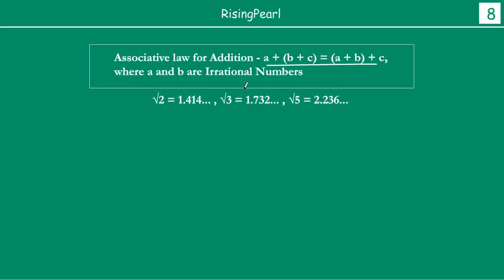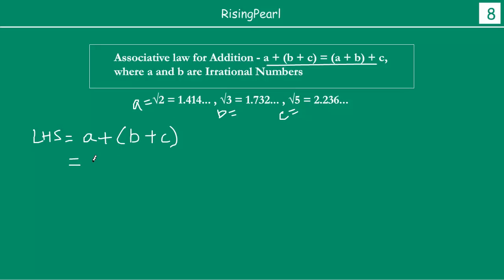So let us see. For this particular example, let us take A as square root 2, B as square root 3, and C as square root 5. So the left hand side value is A plus B plus C, which means square root 2 plus square root 3 plus square root 5.